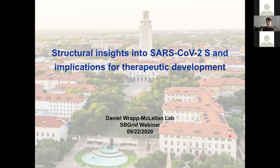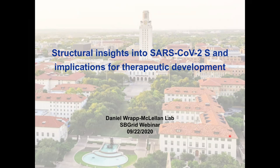Today we have Daniel Rapp from the University of Texas talking about coronavirus work. If you have any questions during the talk, send them through to the hosts in the chat. I'll now introduce Daniel Rapp from the McClellan lab, who will be talking about SARS-CoV-2 structure work happening over the lockdown period — very timely and interesting. Take it away, Daniel.